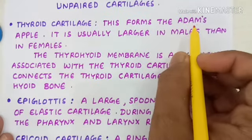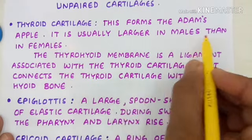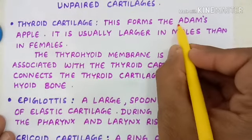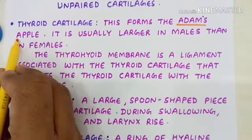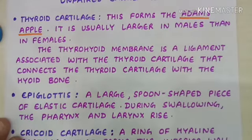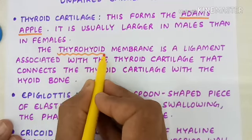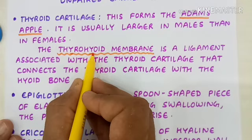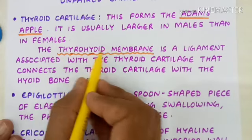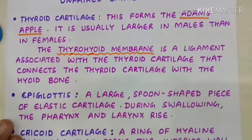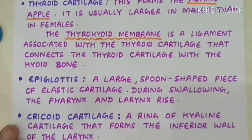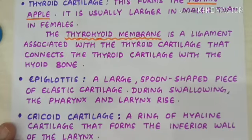The thyroid cartilage forms the Adam's apple. It is usually larger in males. The anterior projection of the thyroid cartilage in the neck, called the Adam's apple, is more prominently seen in males than females. The thyrohyoid membrane is a ligament that connects the thyroid cartilage to the hyoid bone.